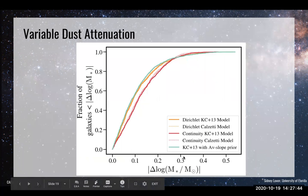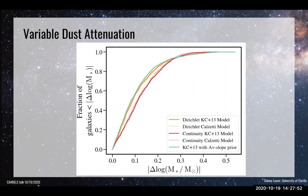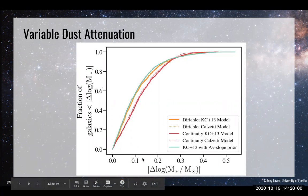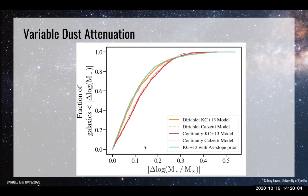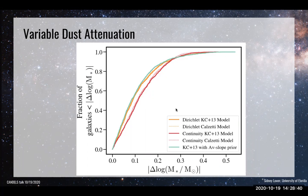These are all extremely preliminary current results. One thing we noticed is that for the non-parametric star formation history model, the stellar masses are not as much impacted by the choice of attenuation model. This plot shows — with orange and green being the same SFH model and reddish-pink being non-parametric with a different prior, while solid versus dotted is a different attenuation curve — that our stellar masses are dominated by the assumption for our star formation history model.